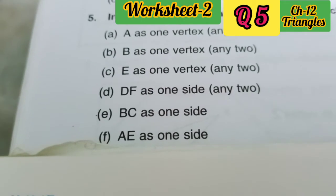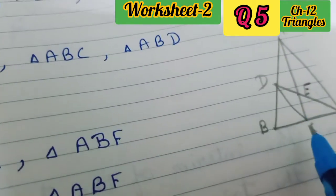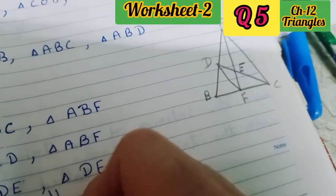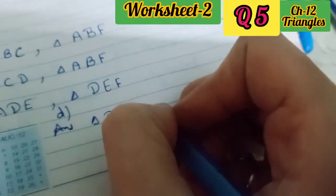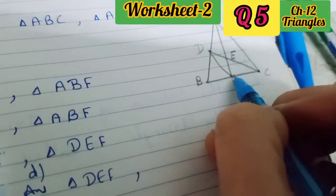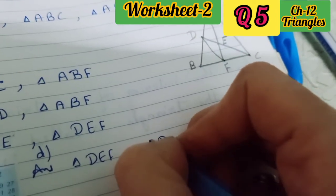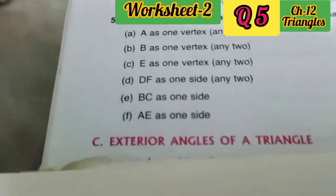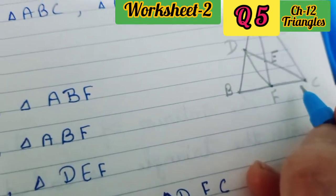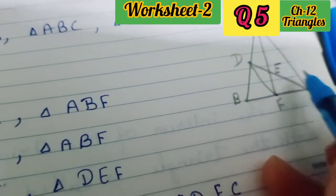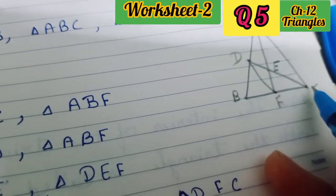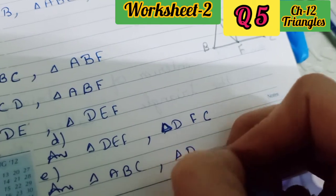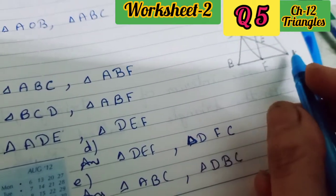Next, DF as one side — you need 2 triangles with DF as one side. Triangle DEF — in this DF is one of the sides. One more: triangle DFC. These are 2 triangles where DF is one of the sides. In the next part, BC as one side — here BC as one side, and you have to write the triangles: triangle ABC and triangle DBC — these are 2 triangles where BC is one of the sides.